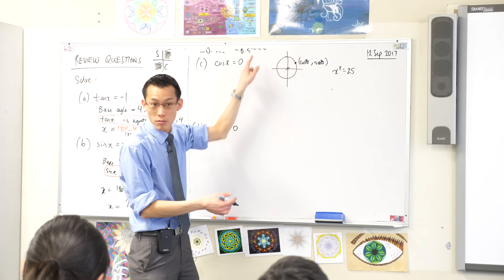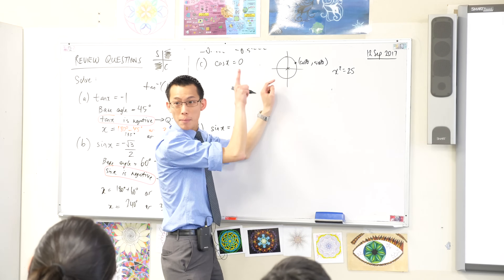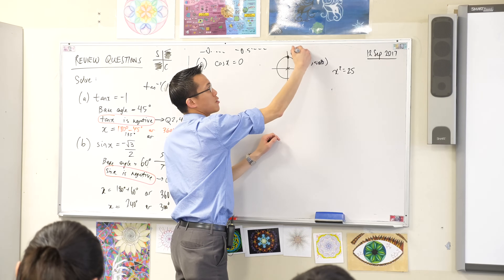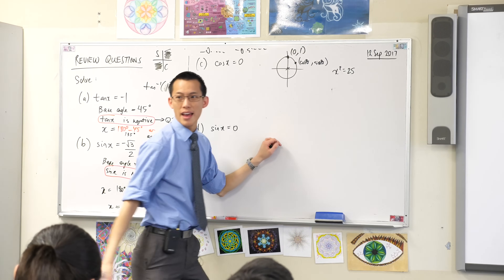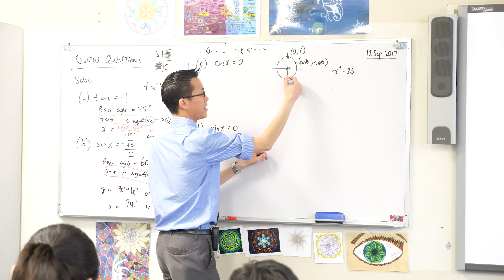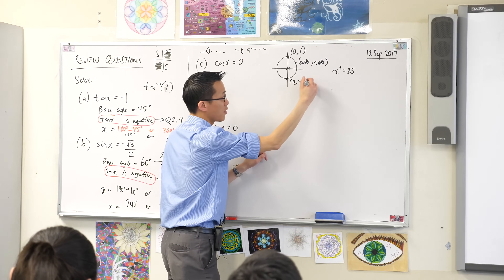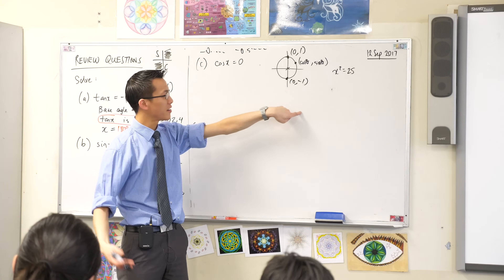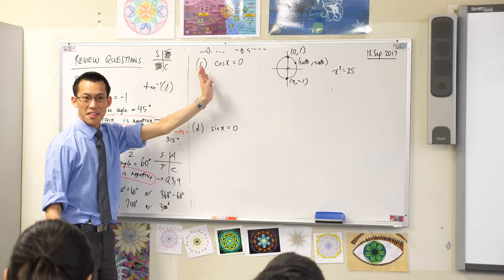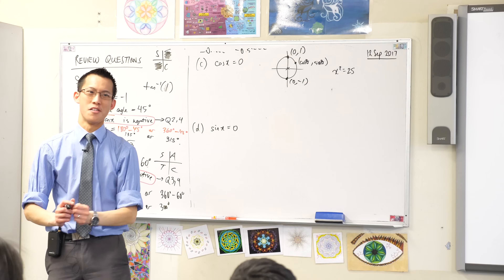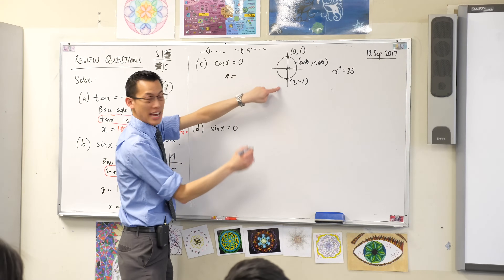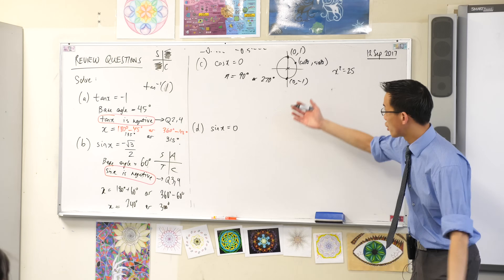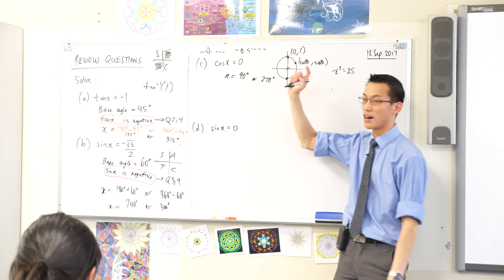Look at the spot above — see this guy here? That has an x-coordinate of 0. You know the whole coordinates: (0, 1). And there's another one down the bottom: (0, -1). Both of these spots have an x-coordinate of 0, which means cos equals 0 at these points. The angles that go with those are 90 and 270 degrees. Chuck in cos 90 and cos 270 in your calculator and sure enough you'll get 0.